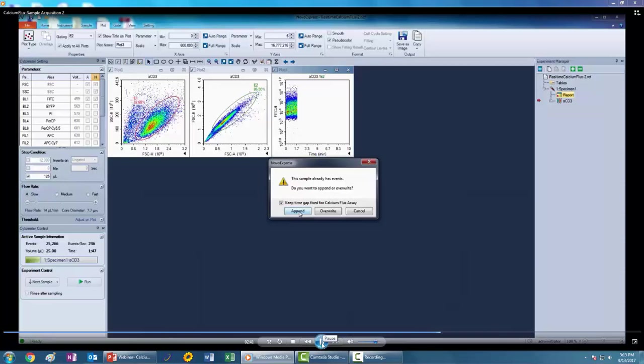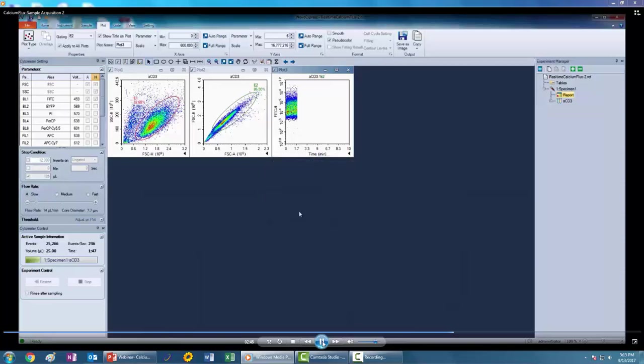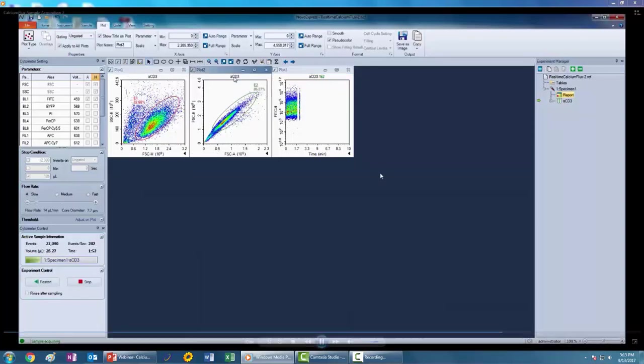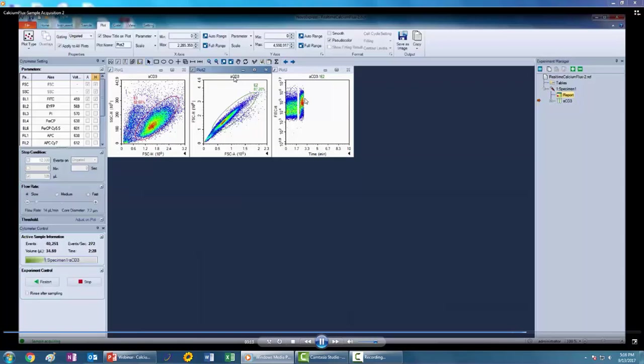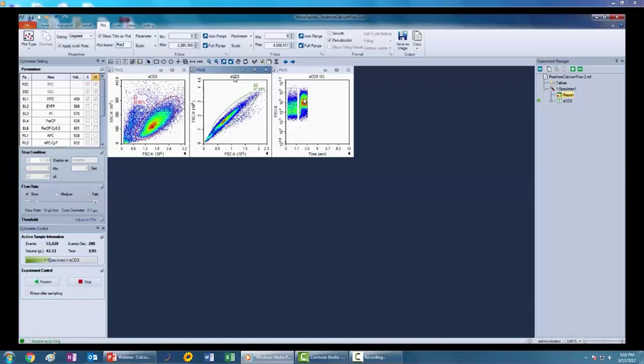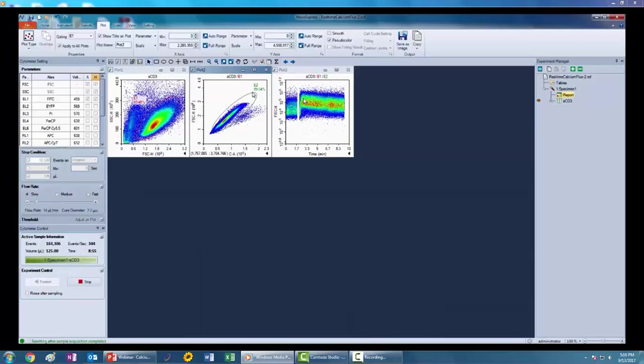After acquisition of your sample begins, you should be able to see the calcium flux occur in real time by the increased fluorescence in the FITC channel. This is again at four times the speed just so you can see the entirety of the calcium flux response. So you see an immediate increase in the fluorescence in the FITC channel showing that there is a very rapid calcium flux response. After we're finished acquiring this data, I'll go further into the specific data analysis that can be done in the Nova Express software.